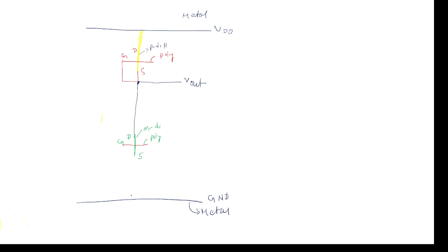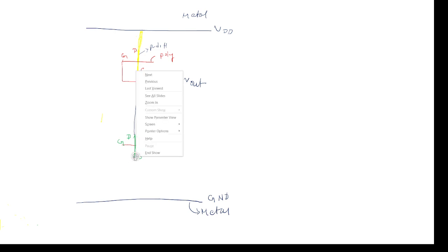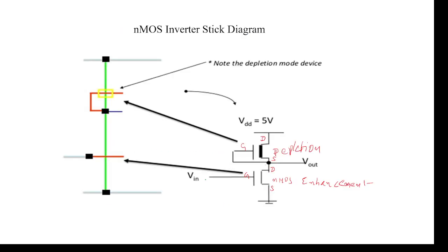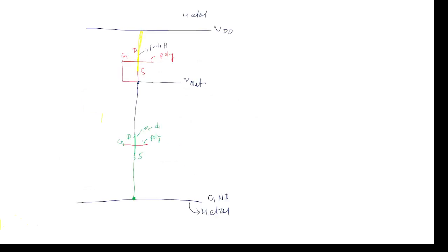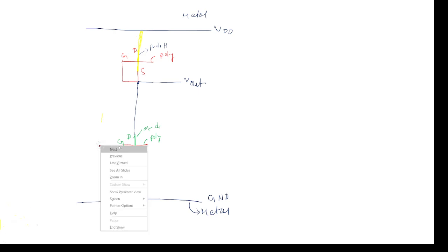Now, source to ground connection is required. There are two options: we can go with metal or we can go with N diffusion — green color. I am going with green. These are two different materials, so contact cut is required. Across the gate only we are giving the input signal. There are also two options here: we can extend with metal or extend with polysilicon material. I am going with polysilicon material — red color. This is the input A.